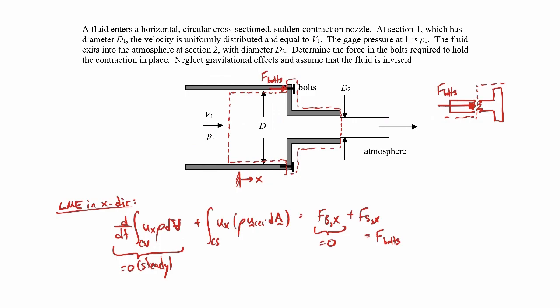The flow is inviscid, so we don't have to worry about shear stresses. However, we have a gauge pressure p1 at the inlet, so there's a pressure force acting there in the positive x direction: p1_gauge times pi*d1²/4 (pressure times area). The outside of the pipe is open to the atmosphere, which has zero gauge pressure, so there's no pressure force to include on the outside.